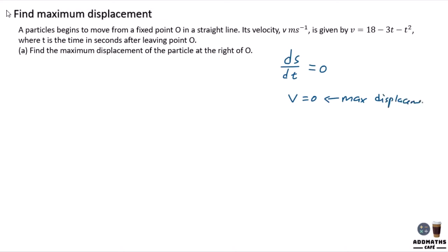So in this case, putting v equal to zero: 18 - 3t - t² = 0. Rearranging: t² + 3t - 18 = 0. You can get your t answer by factorization. From the previous question, you know that t equals three.